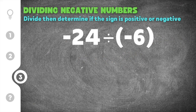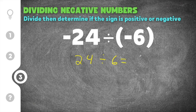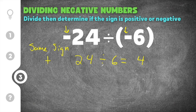Our last practice problem gives us negative 24 divided by negative six. We divide these as if they are positive numbers: 24 divided by six is four. To figure out if this four is positive or negative, we look at the signs. This 24 is negative and this six is negative — they have the same sign. Because they have the same sign, the answer is going to be positive. The two negatives cancel, so negative 24 divided by negative six is positive four.